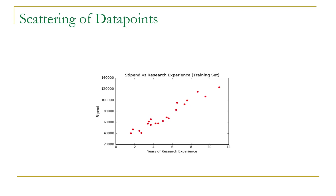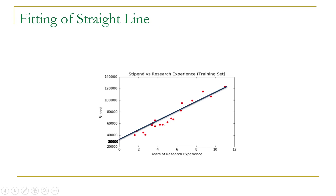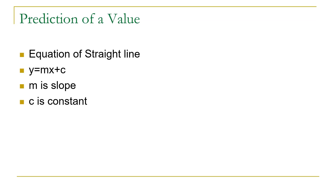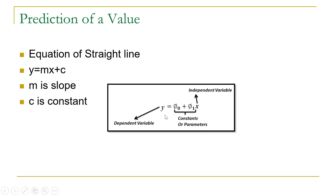The more data we have, the more accurately we will be able to predict. The objective of the machine learning model will be to fit a straight line over these data points, and by using this line we can predict the stipend of any researcher based on his or her research experience. We know that the equation of a straight line is y equals mx plus c. Here y is our dependent variable and x is our independent variable. M indicates the slope of this line while c is the constant. We will use the equation of the straight line to predict the value of the dependent variable, and here it is represented in this way.